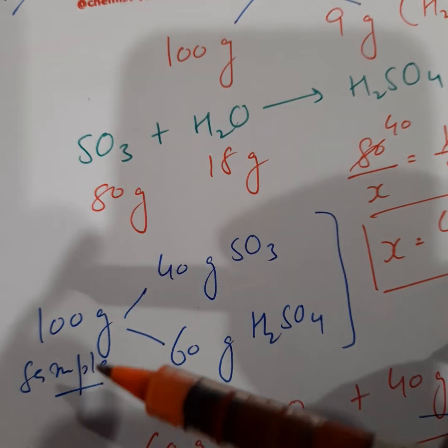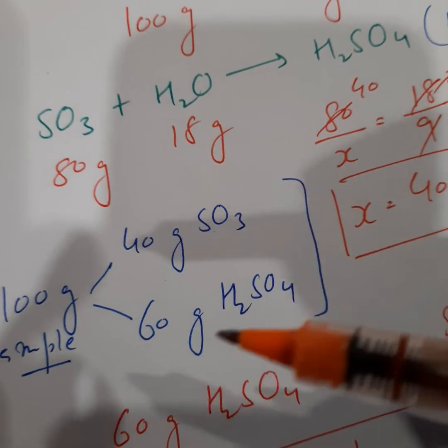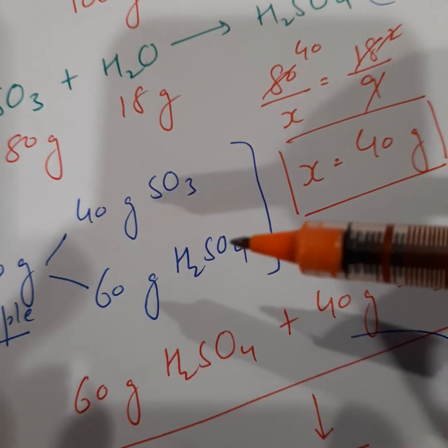Now we know the exact split of the sample: 100 grams of this sample contains 40 grams SO3 and obviously the remaining is 60 grams of sulfuric acid.